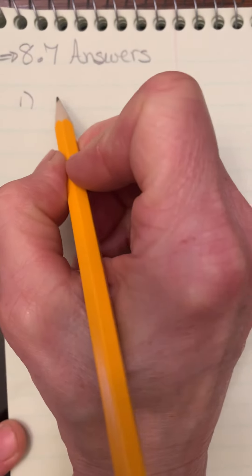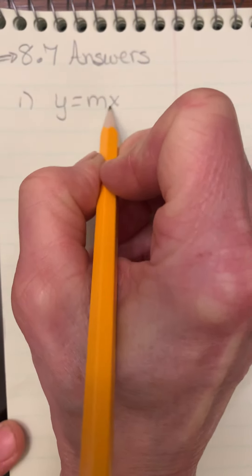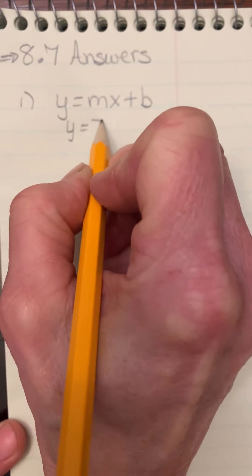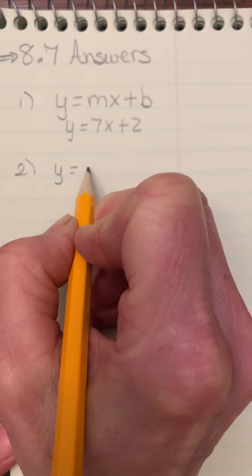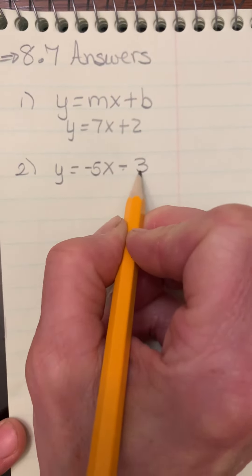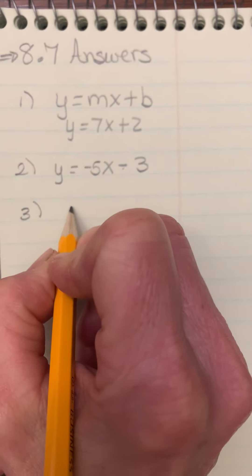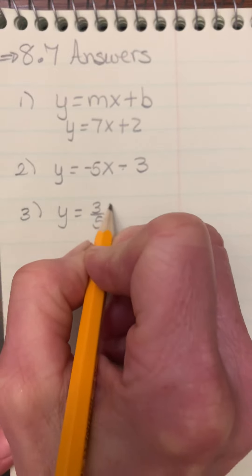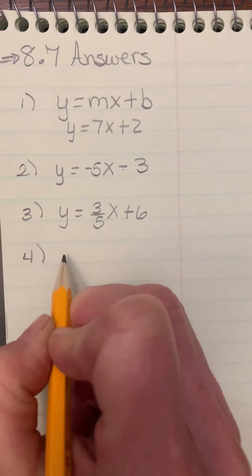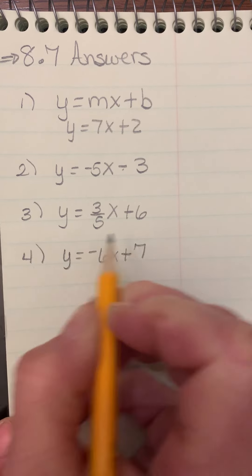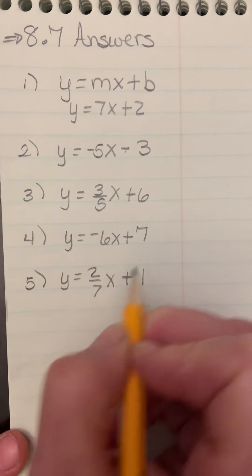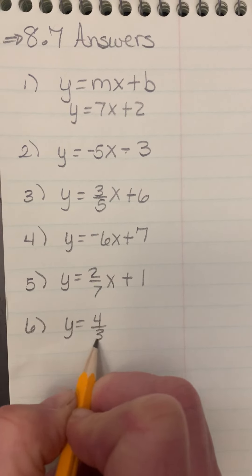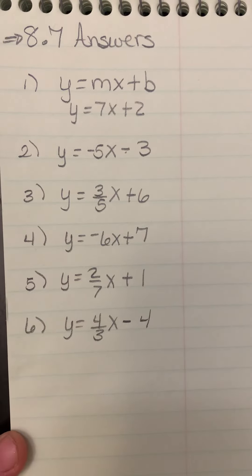Question 1 just gives you the slope and the y-intercept; your job is to write it in slope-intercept form: y = 7x + 2. Question 2: y = -5x - 3 — make sure you write minus 3, not plus negative 3. Question 3: y = (3/5)x + 6. Question 4: y = -6x + 7. Question 5: y = (2/7)x + 1. Question 6: y = (4/3)x - 4. You're just substituting values for m and b.